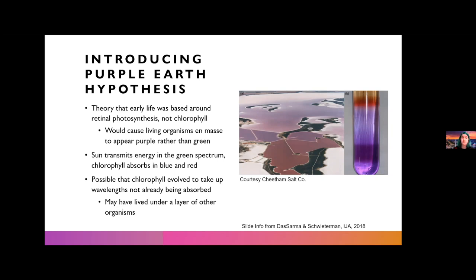So this implies that chlorophyll possibly evolved so that the organisms that had it evolved to take up a wavelength that weren't already being absorbed. It's possible that the organisms that originally had chlorophyll lived under a layer of other organisms that had retinal instead, which would cause the Earth in general from far away to appear purple rather than green, thereby making the name of the theory the purple Earth hypothesis.